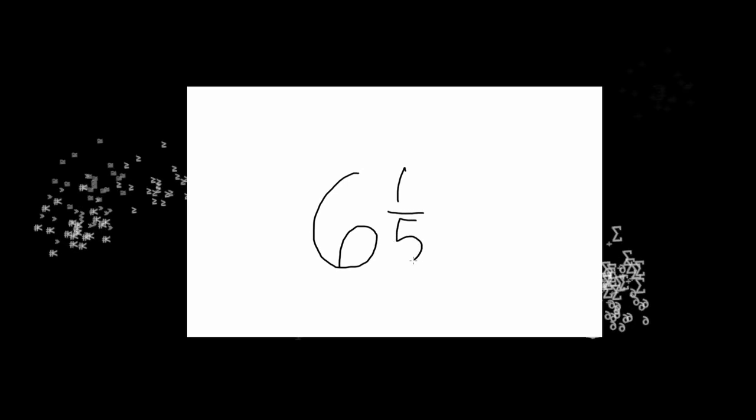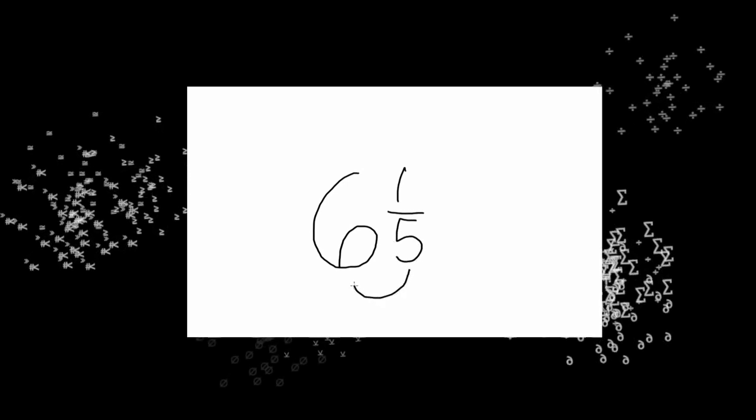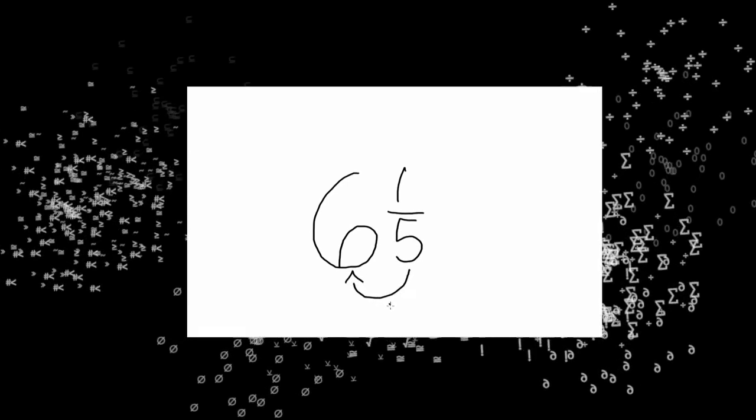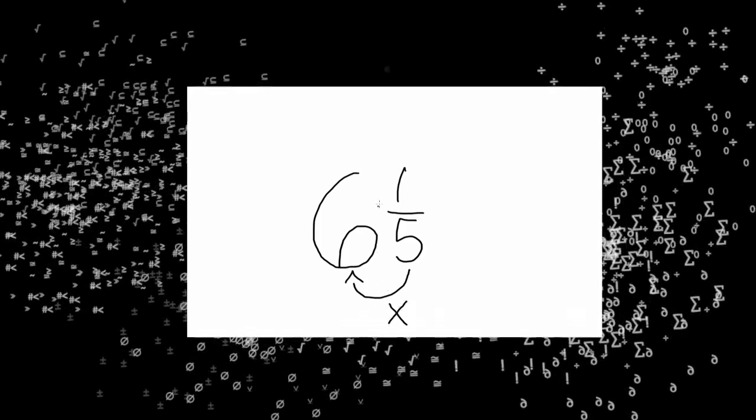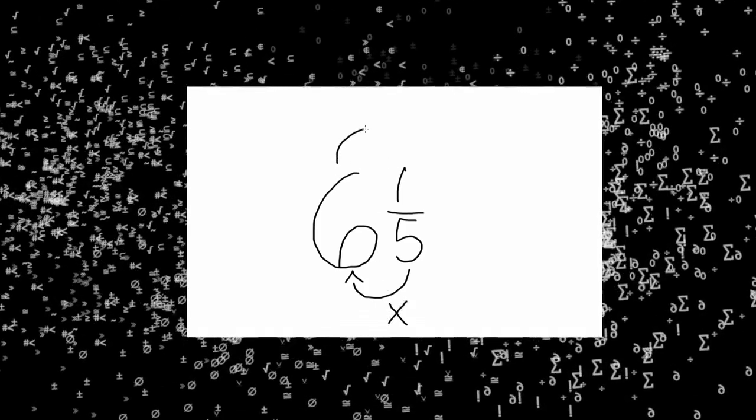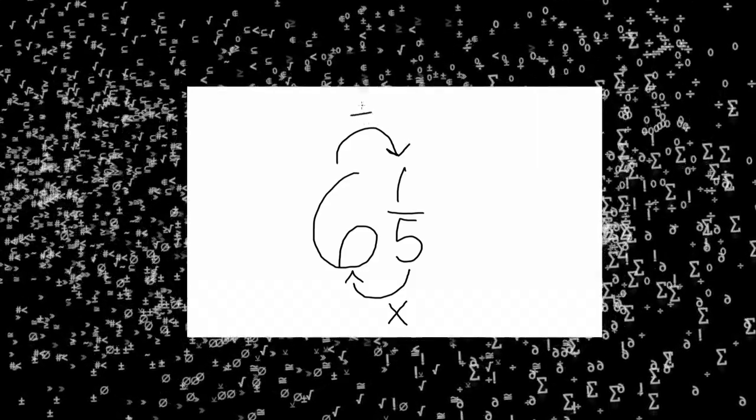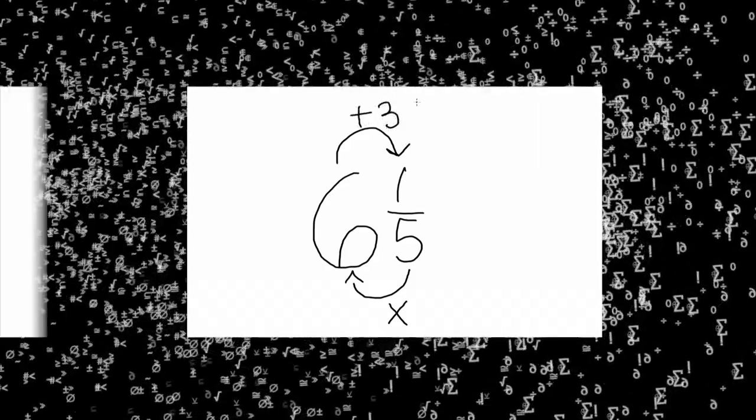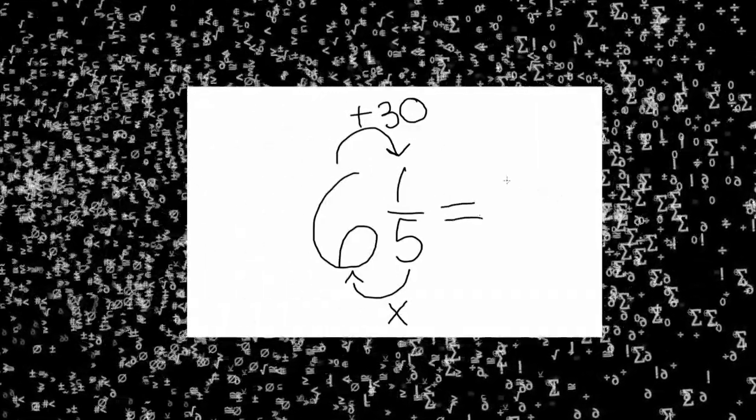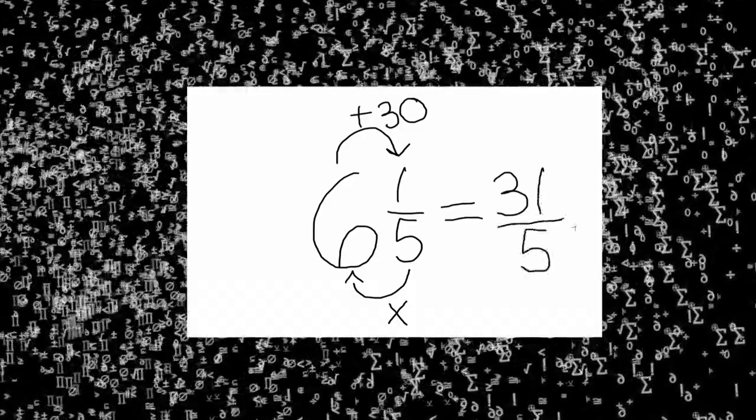Next convert your mixed number to improper fractions. Six and one-fifth you would multiply your denominator five by the whole number six. Next you would add that product to one. This sum would be written over five. Your improper fraction is thirty-one-fifths.